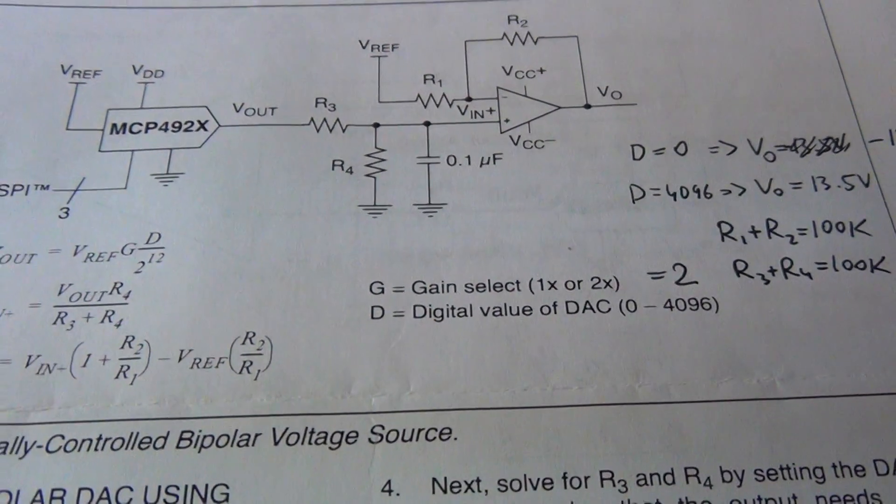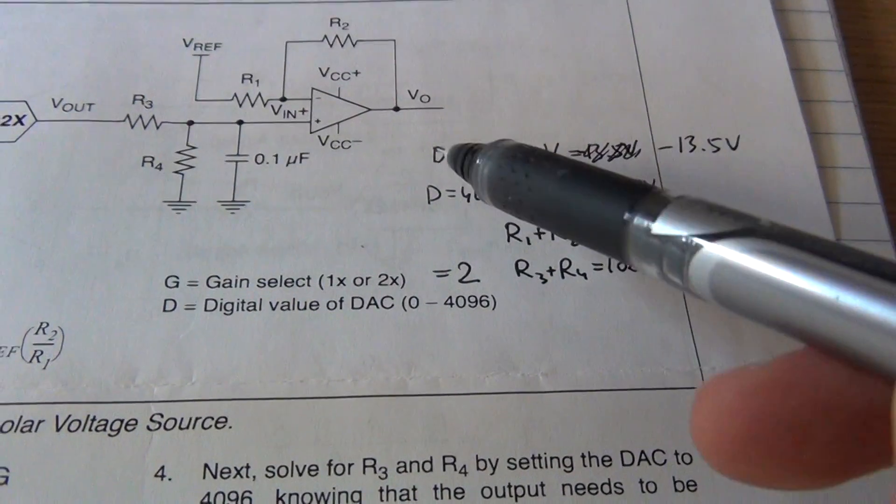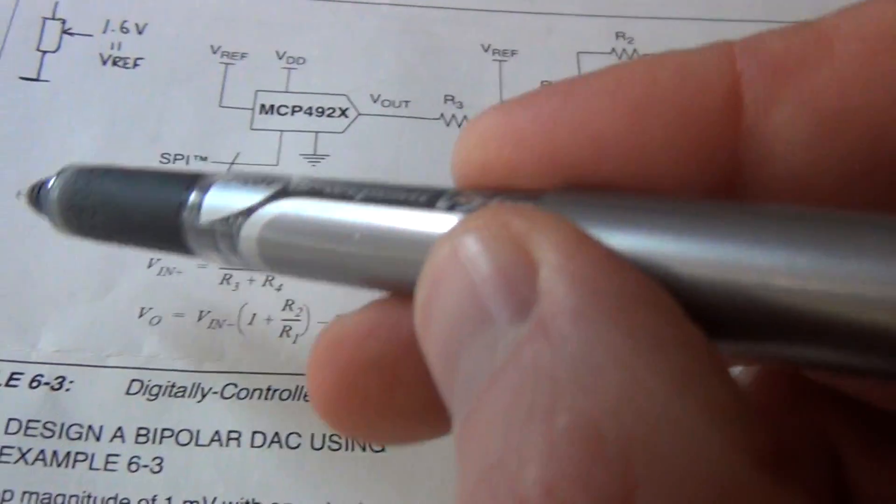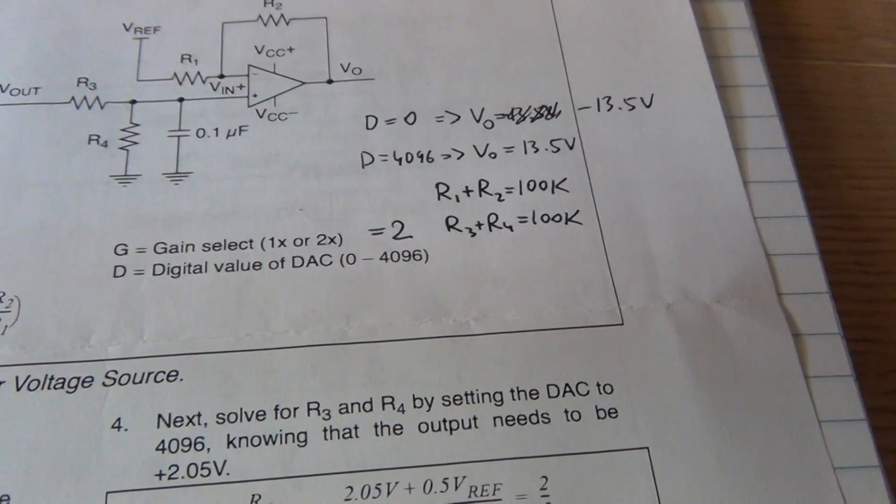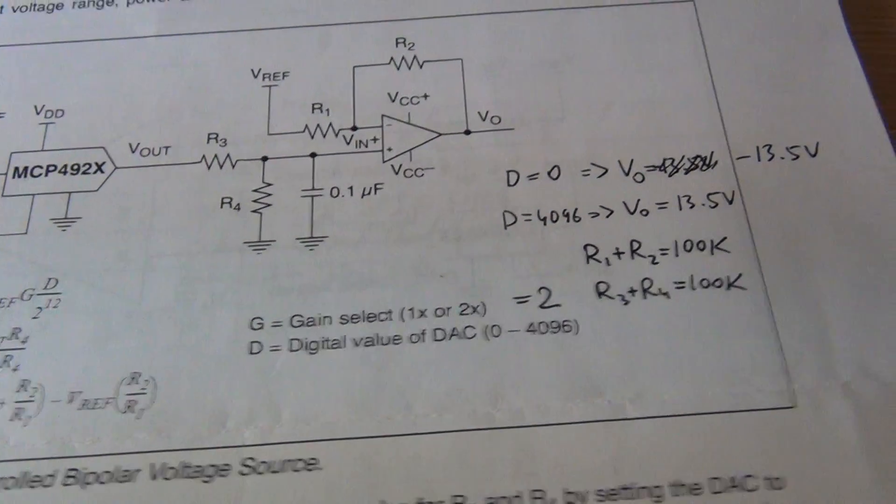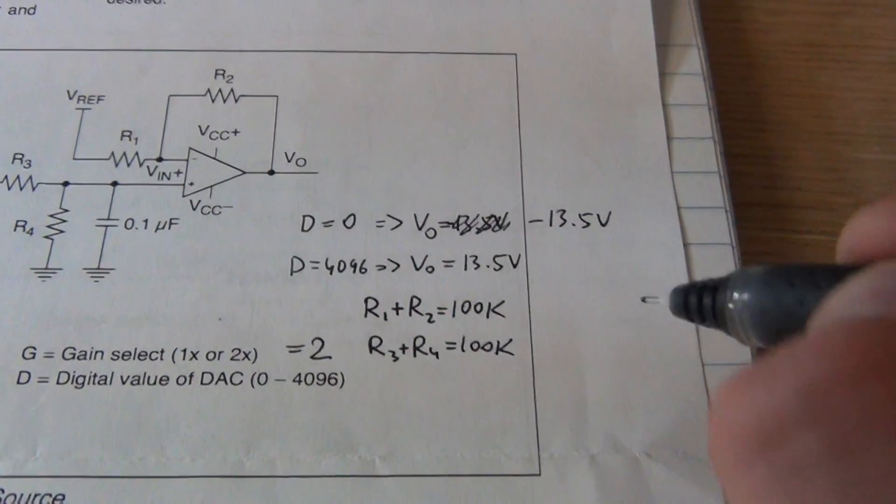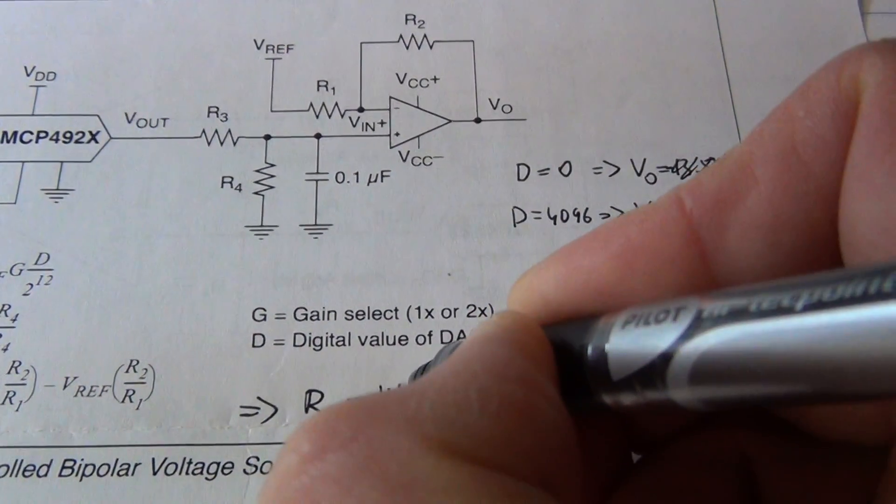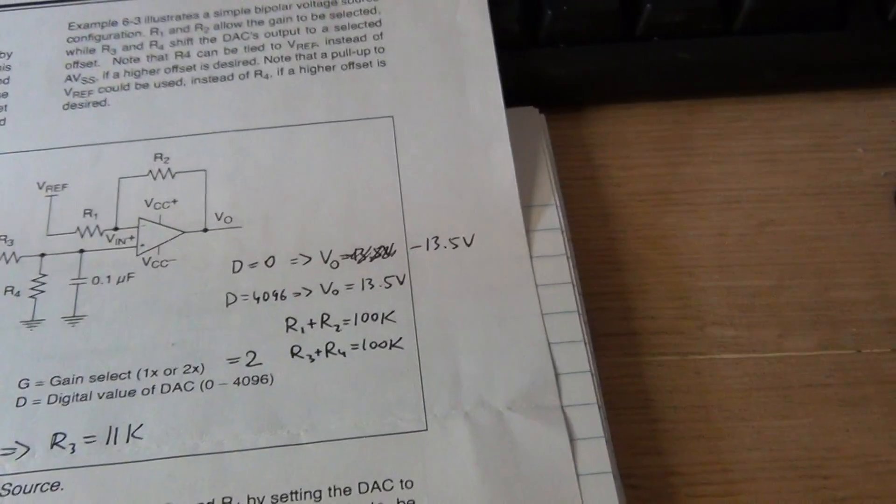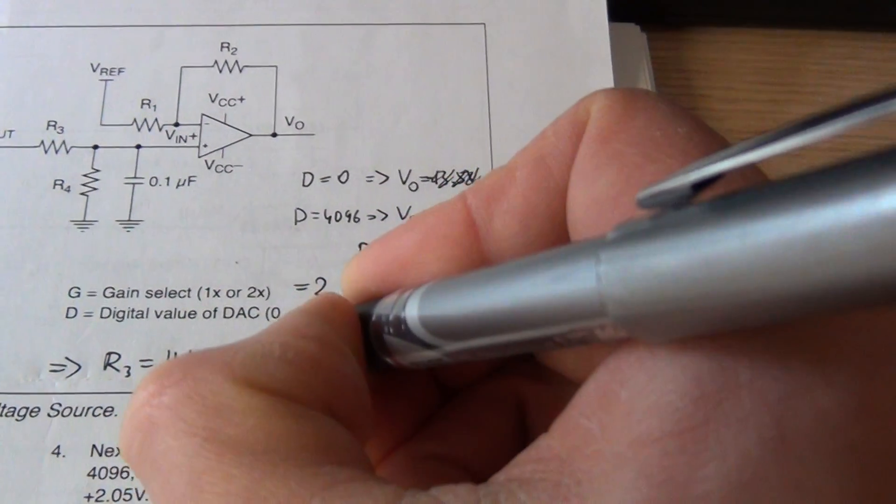So now the only thing that we need to do is to put these values, the ones that we want in case 1 and 2, into these formulas and then solve for R1, R2, R3 and R4. And if we do it correctly, then it will turn out that R3 is going to be 11K and correspondingly R4 is going to be 89K.